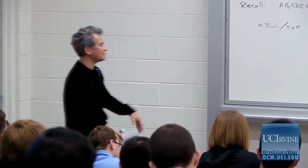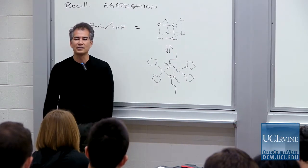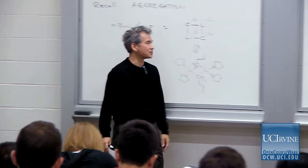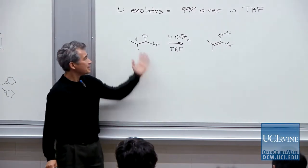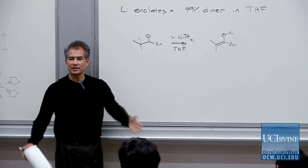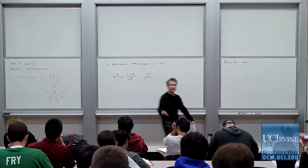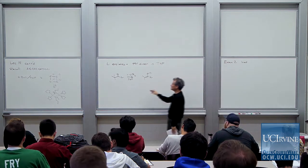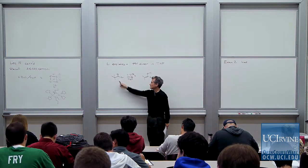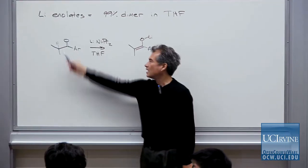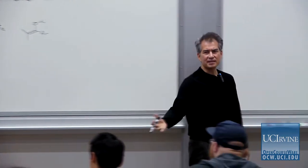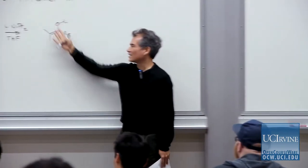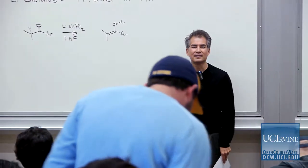We're stuck in this situation where we want to be truthful about our representations. So let me show you some heartening stuff for us as arrow pushers. I'll bring you back to a study of Andy Streitweiser that deals with the chemistry of enolates. When you put a lithium enolate in THF — you make lithium enolates with strong bases like lithium diisopropyl amide — you deprotonate at the alpha position. Over 99% of this lithium enolate exists as a dimer in solution.